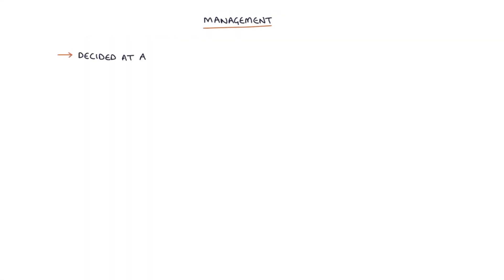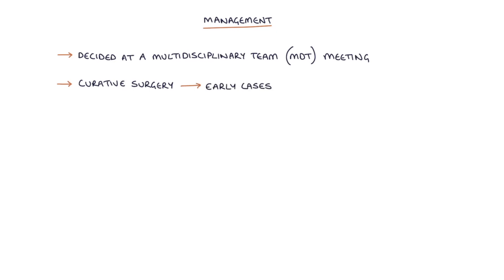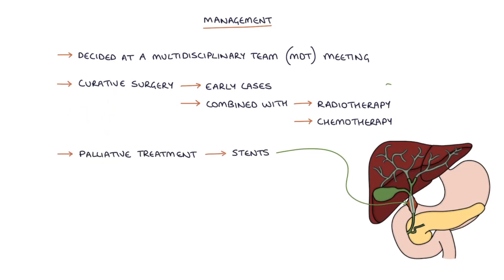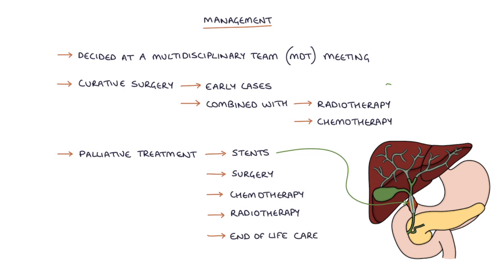Finally, let's talk about management. Management will be decided at a multidisciplinary team, or MDT, meeting. Curative surgery may be possible in early cases and may be combined with radiotherapy and chemotherapy. However, in most cases curative surgery is not possible. Palliative treatment may involve stents inserted to relieve biliary obstruction, surgery to improve symptoms such as bypassing a biliary obstruction, palliative chemotherapy, palliative radiotherapy, and end-of-life care with symptom control.